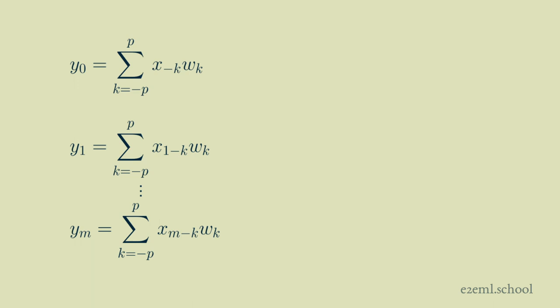So to write this more concisely, for the first element of our result, y sub 0, we take an increment k starting at minus p all the way to plus p. And at each one we multiply x sub minus k times w sub k.